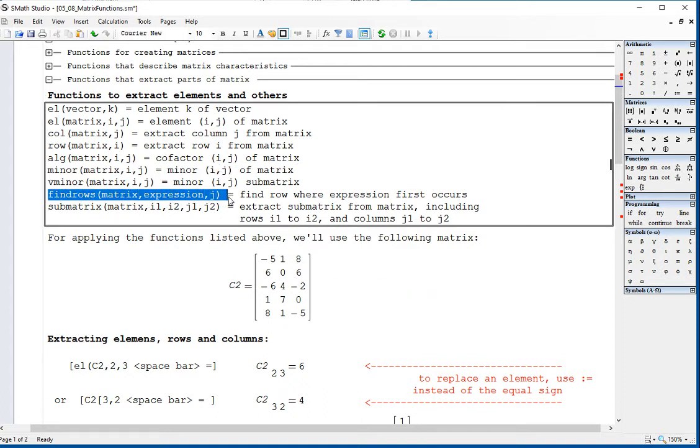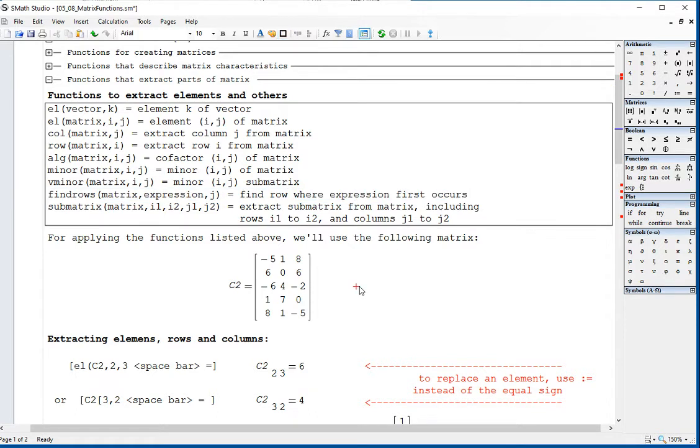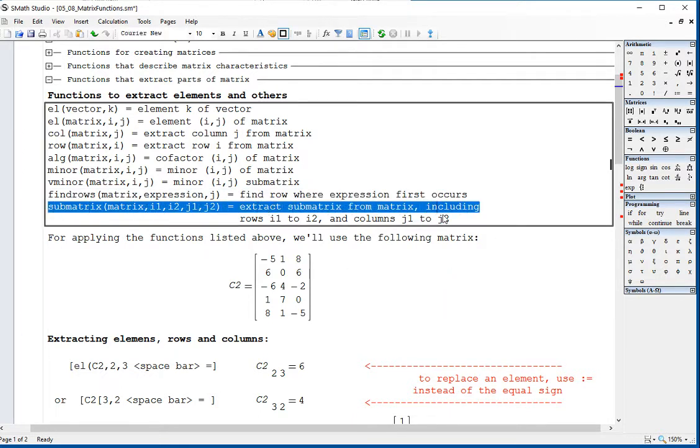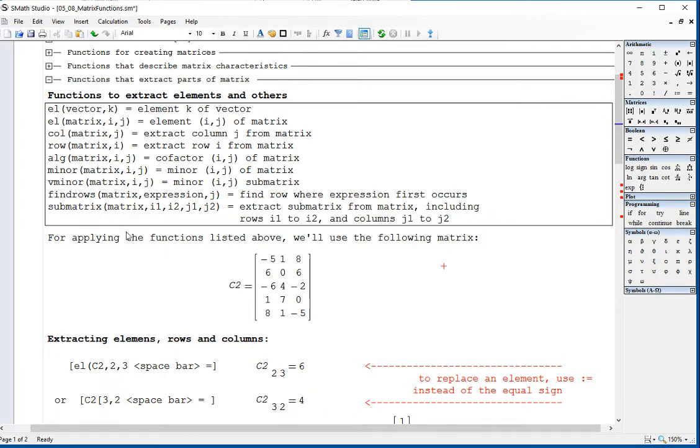Find rows, matrix expression, finds the row where a certain expression first occurs. These are mostly useful in programming, and the function submatrix will extract a submatrix out of an existing matrix, starting with row i1, ending in row i2, starting with column j1, ending with column j2.